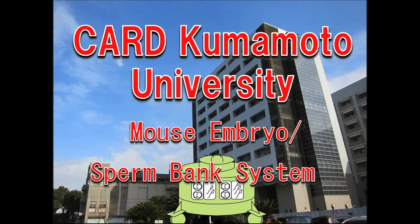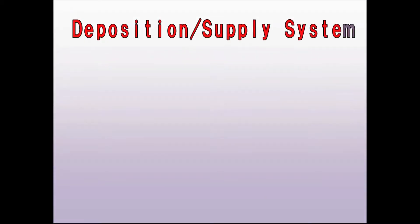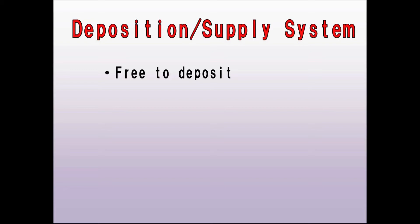Allow me to introduce the mouse embryo and sperm bank system used at CARD Kumamoto University. First, let's look at the Kumamoto University CARD Deposition Supply System. The purpose of this system is to preserve mouse strains using research and development. Mice can be deposited here free of charge, and the embryos and sperm taken from deposited mice are also cryopreserved for free.